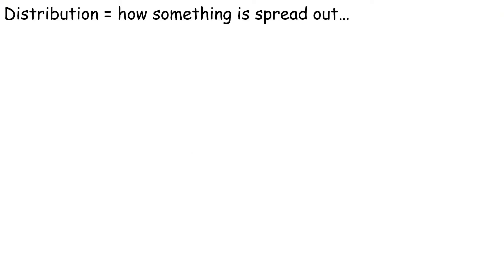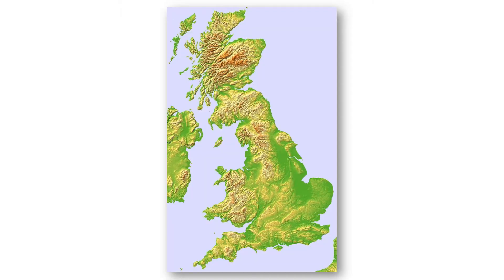Now we're looking at the distribution of them, and all distribution means is how something is spread out or spaced out — basically where are these areas. There is a relief map of the UK: the darker brown areas are mountains, and the greeny-yellow areas are much lower-lying areas.